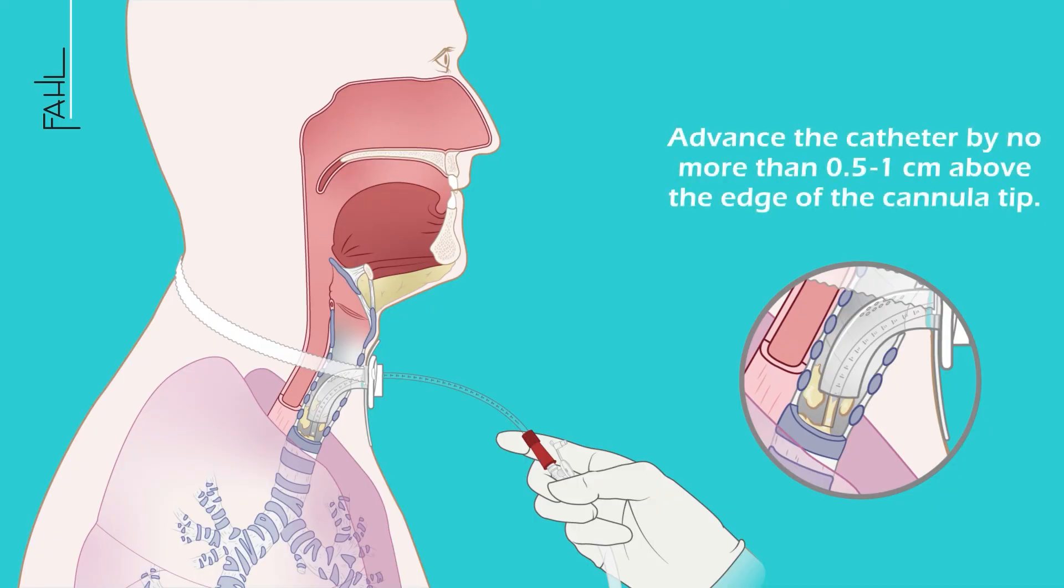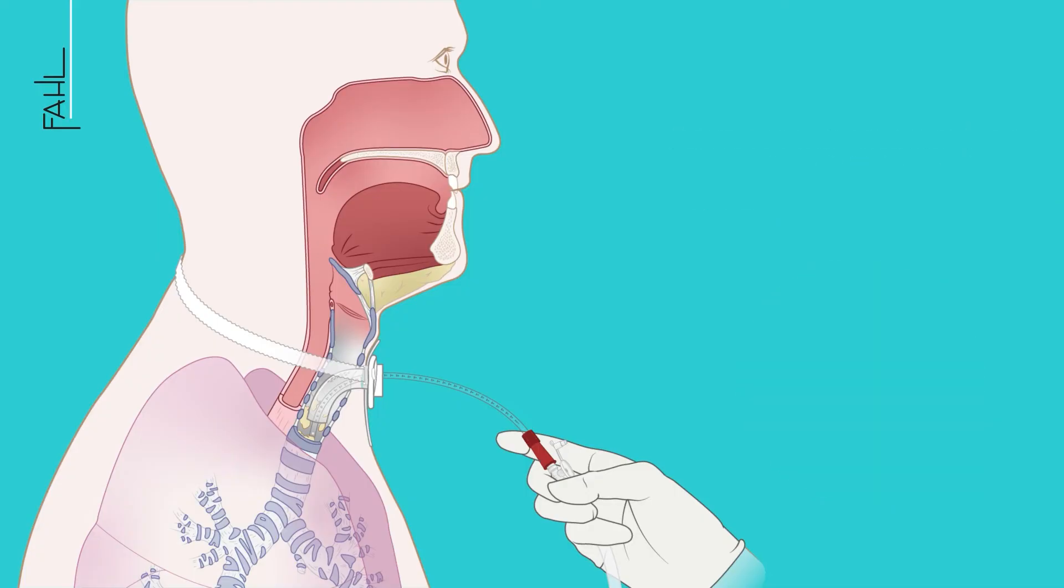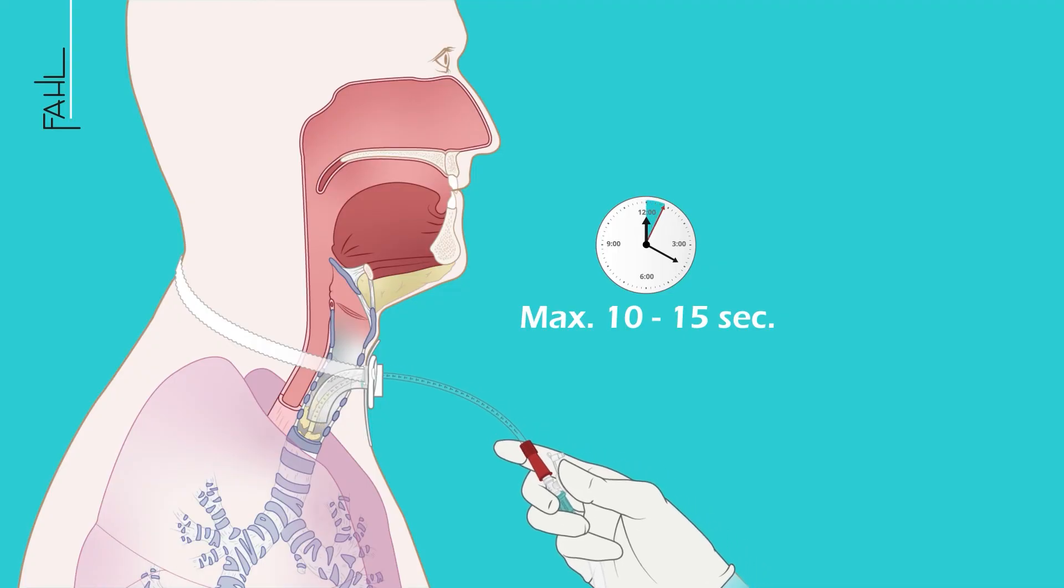Advance the catheter by no more than 0.5 to 1 cm above the edge of the cannula tip. Suction is applied by closing the fingertip with the thumb. Make sure that the individual suction process does not last longer than 10 to 15 seconds.